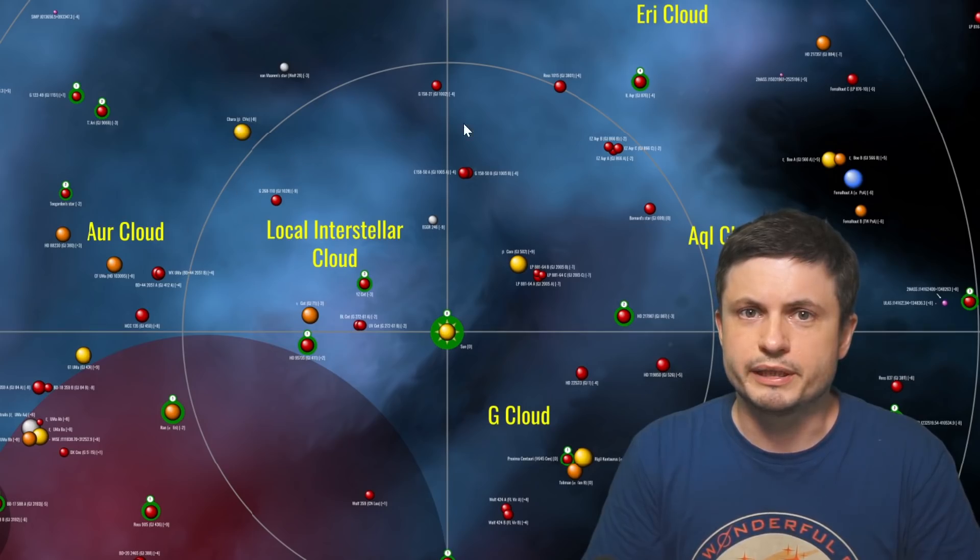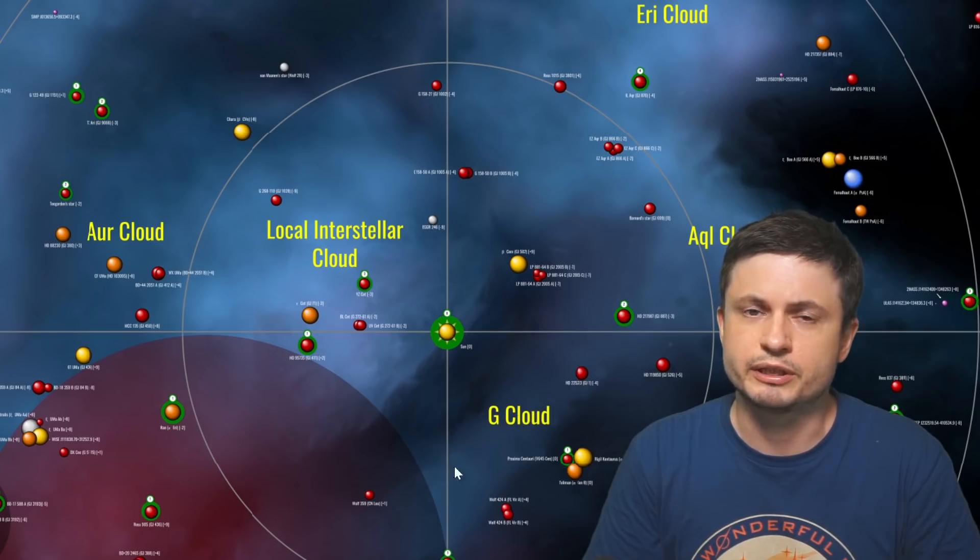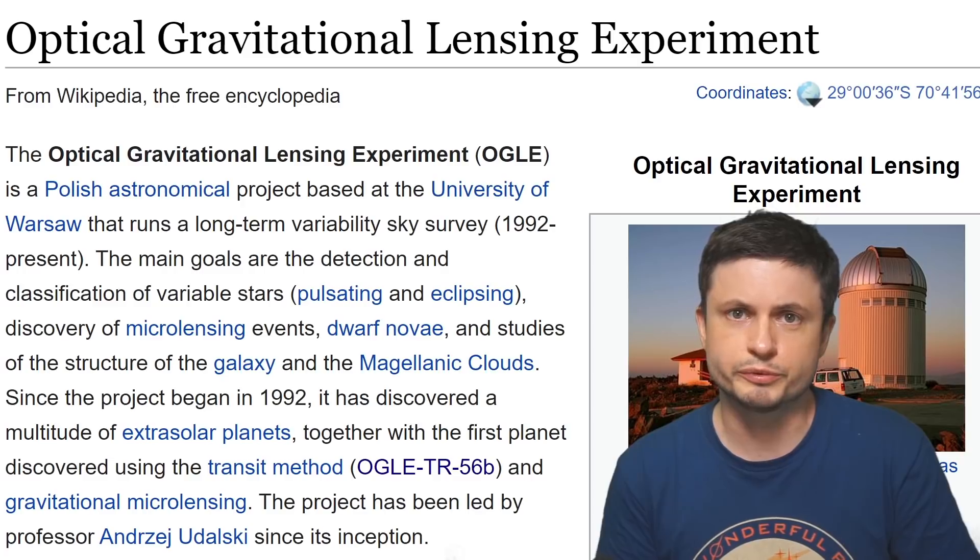With the biggest one being the local interstellar cloud that we're currently flying through, to a lot of other unusual objects such as large asteroids, large comets and probably a lot of planets.